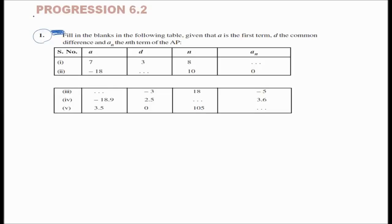Hello dear students, today we are going to do problems about arithmetic progression section 6.2. In this first question, fill in the blanks — we are given a table and we have to fill in the blanks. First question: a is given and b is given. Here a is equal to n, d is equal to n, and n is also given; we have to find an.